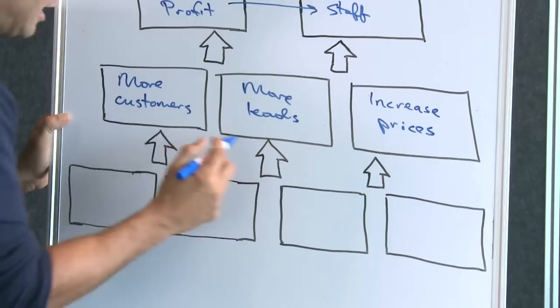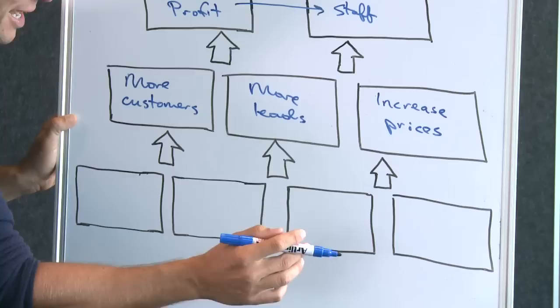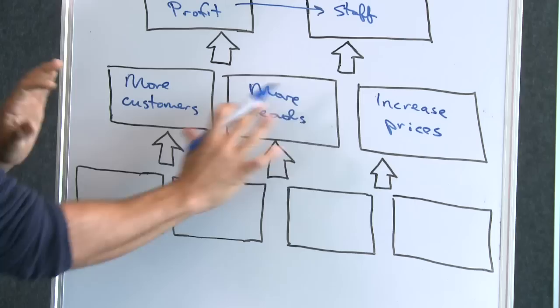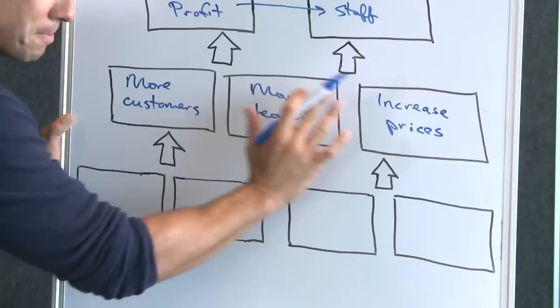We also need to increase prices. If you have more leads coming into the business, you can raise your prices, and even if some leads don't become customers, the ones that do are paying more. Together — more leads and higher prices — these will definitely increase the profit of the business. We'll put some numbers to them in a second, but for now let's identify what things directly below that level we can do. One, we need to increase marketing activities.